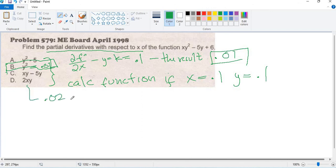So this is wrong. Letter B is the answer because this is 0.01 and this is 0.01. If the result is the same, it is the correct answer.